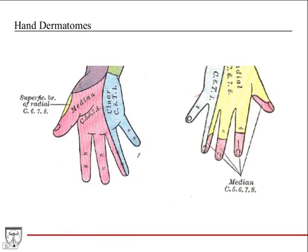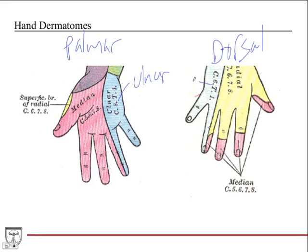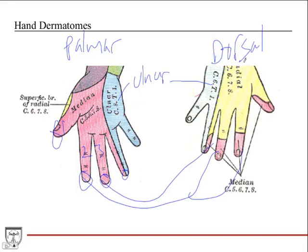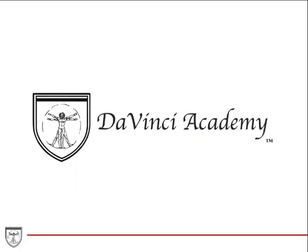To wrap up, we'll review the hand dermatomes. On the palmar surface, the medial one and a half fingers is ulnar nerve. On the dorsal aspect, the ulnar half is also ulnar nerve — so whether palmar or dorsal, the ulnar half is ulnar nerve. On the palmar aspect, the median nerve supplies the first three and a half digits including the fingertips on the dorsal aspect as well. The radial nerve supplies the dorsal aspect of the lateral or radial side of the hand. That concludes our discussion of blood vessels and nerves in the hand.